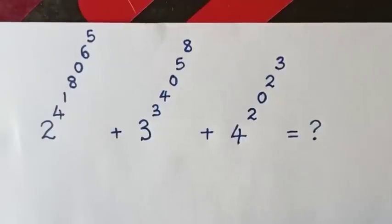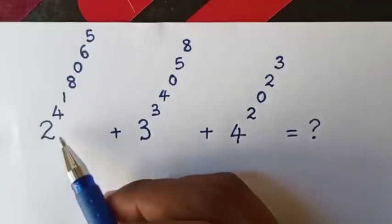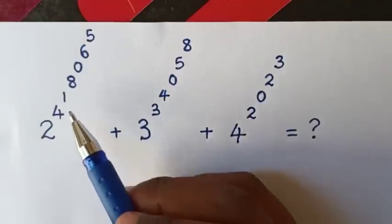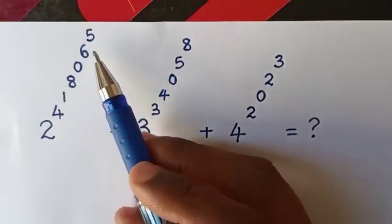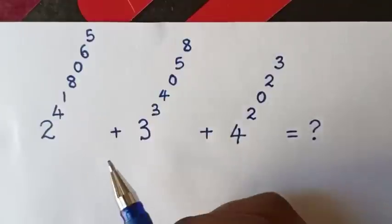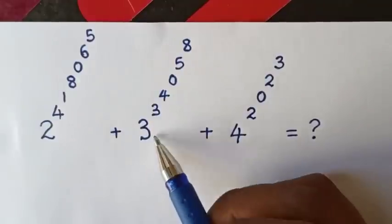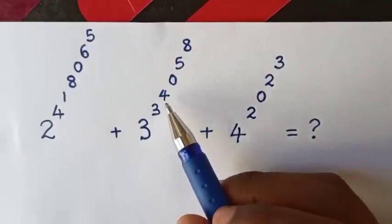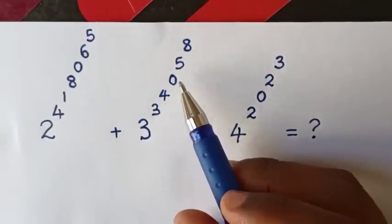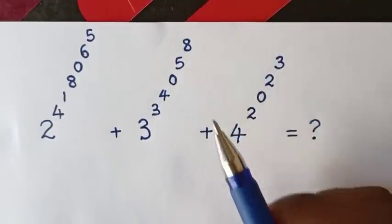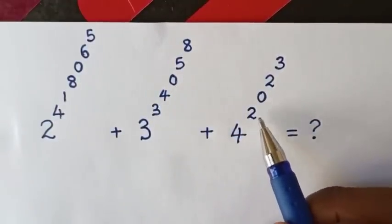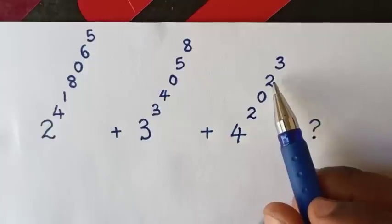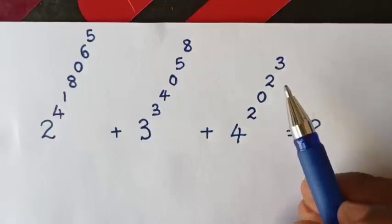Hello. How to solve this nested exponential equation: 2 power of 4 power of 1 power of 8 power of 0 power of 6 power of 5, plus 3 power of 3 power of 4 power of 0 power of 5 power of 8, plus 4 power of 2 power of 0 power of 2 power of 3.